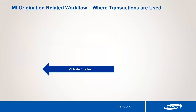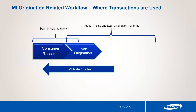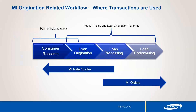The rate quote and MI order transactions support different phases of the loan manufacturing cycle. MI rate quote information can be beneficial early in the home buying process, starting with consumer research. New point of sale, or POS, systems are shifting the buying process earlier in the decision cycle, requiring consumers to be aware of their price options with a good degree of accuracy. Product and pricing engines and loan origination systems provide access to MI rate quotes, ensuring MI pricing accuracy. The MI order is typically placed during the loan processing or underwriting phases. For the most accurate MI price and guideline decision, the MI company must have the most accurate and up-to-date loan data.